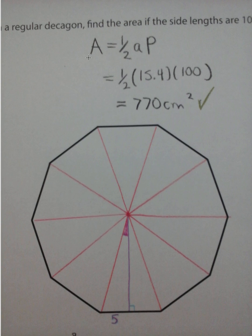Now use the formula: area equals one half apothem times perimeter. Plug in the values. The area is estimated at 770 centimeters squared.